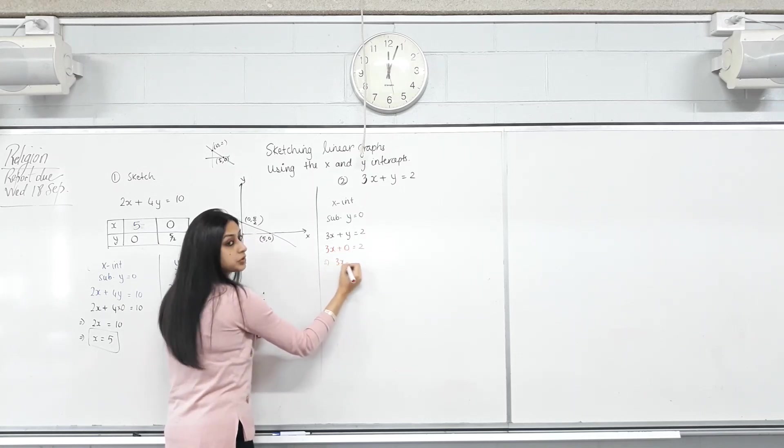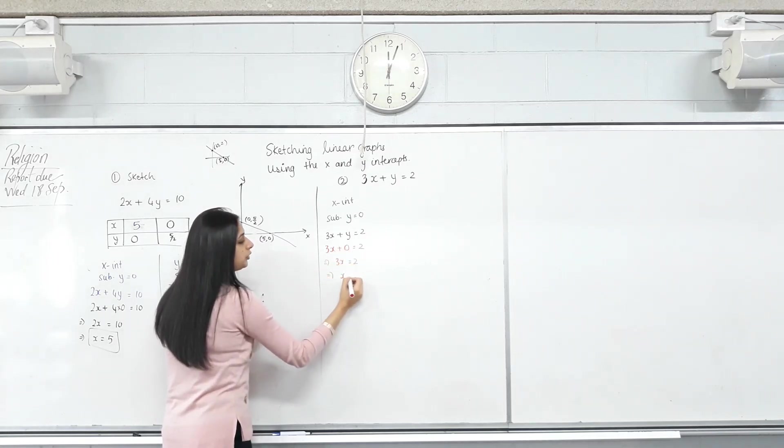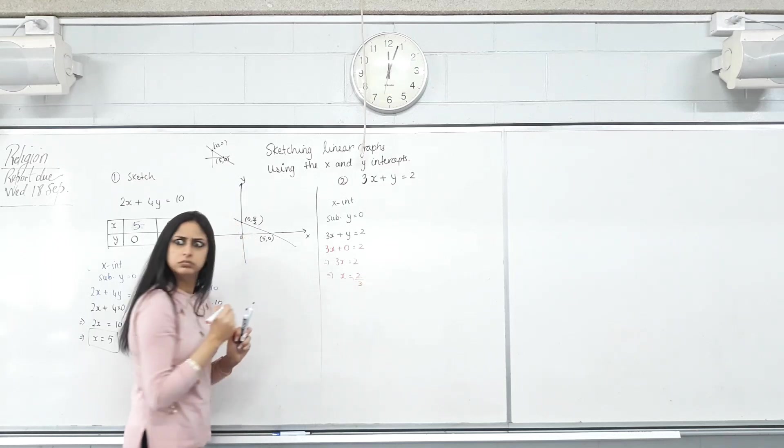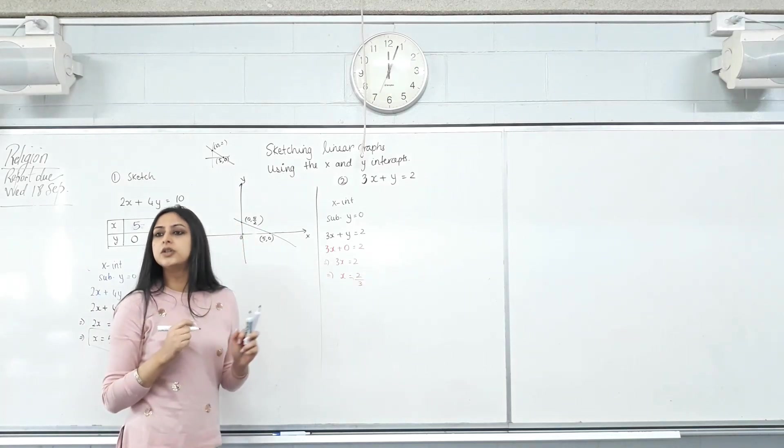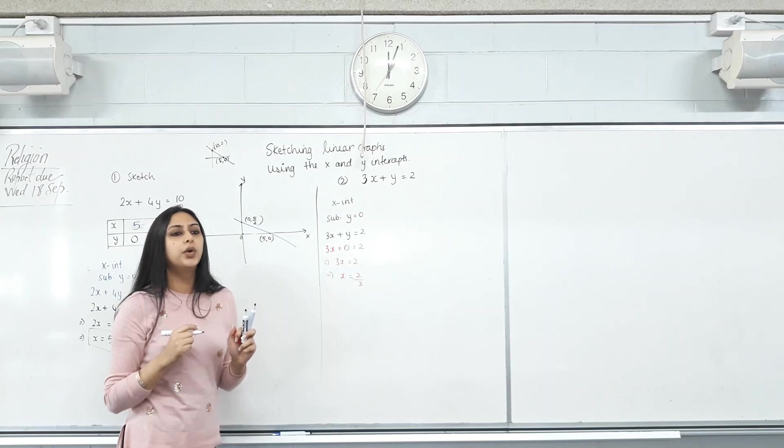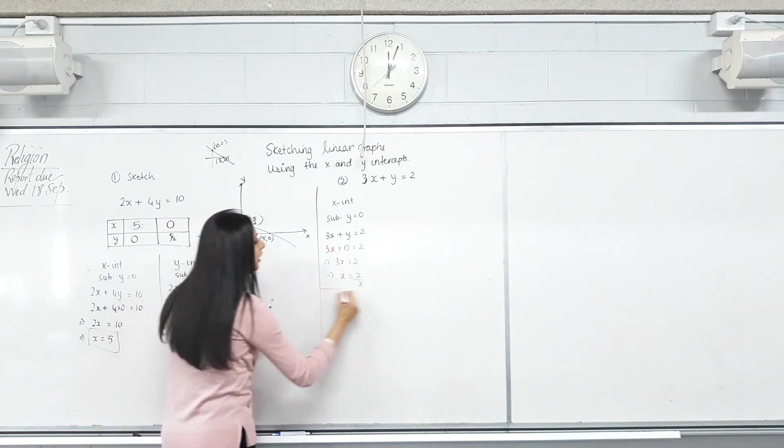So 3X plus 0 equals 2, or 3X equals 2. So X will be equal to 2/3. Do I convert it into a decimal? No. That's a sin.